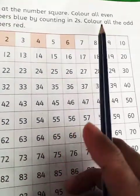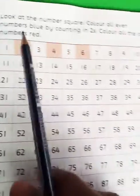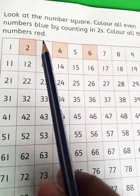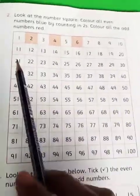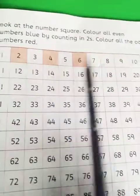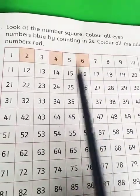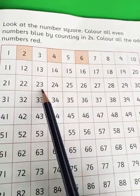Look at the number square. Color all even numbers blue by counting in 2s. Color all the odd numbers red. So here what we have to do? We have been given numbers 1 till 100. We have to color all those even numbers with blue color and the odd numbers with red color.